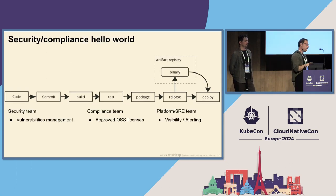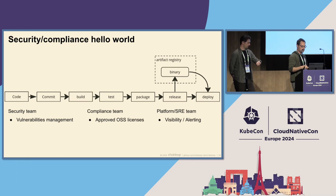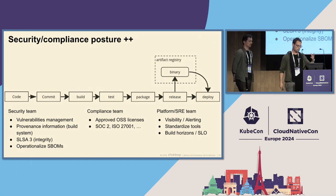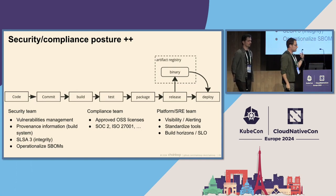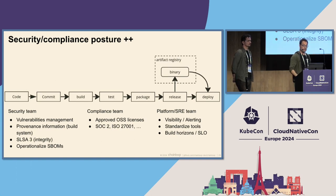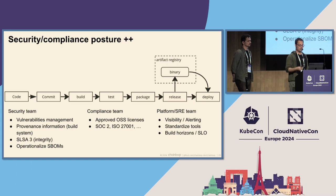That's one problem, but the second problem is: if you remember the picture of different stakeholders asking for information, it gets much worse. In a bigger organization, you might have the security team asking about integrity with SLSA. Or they might be asking about ways of sharing SBOMs. You might be in the process of doing SOC 2. You might need to retrieve pieces of evidence for that. And the platform team might be asking for SLOs and more advanced things. You can see this gets quite complex and very hard to scale.